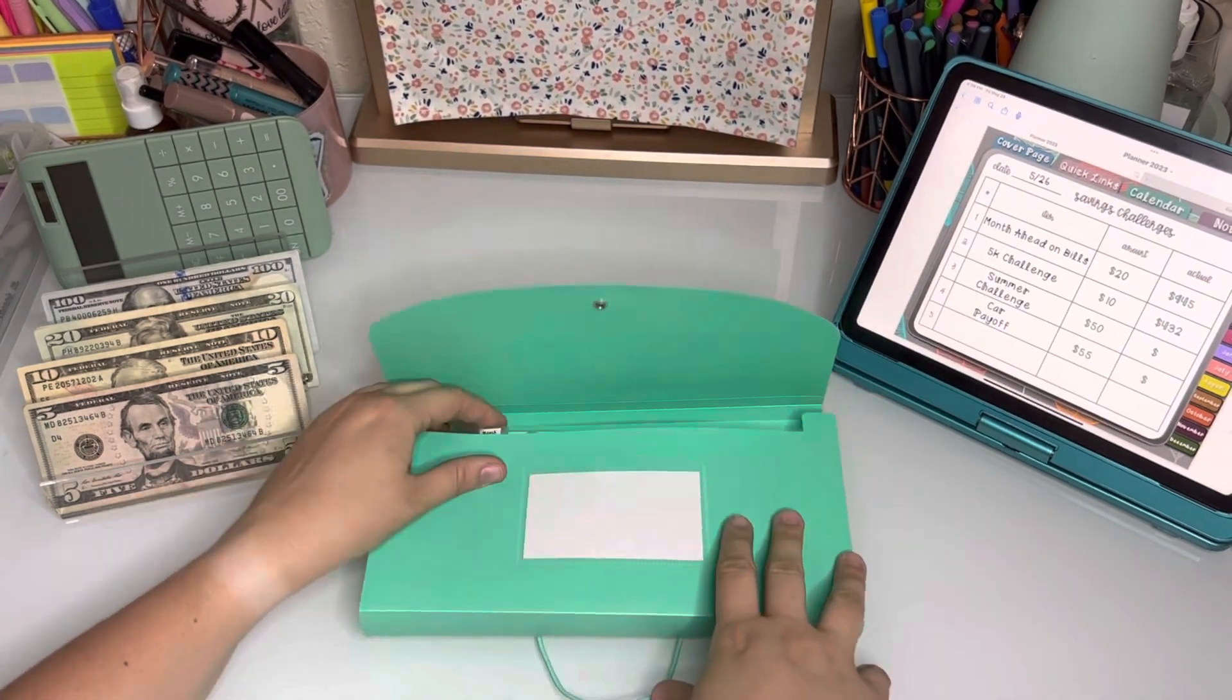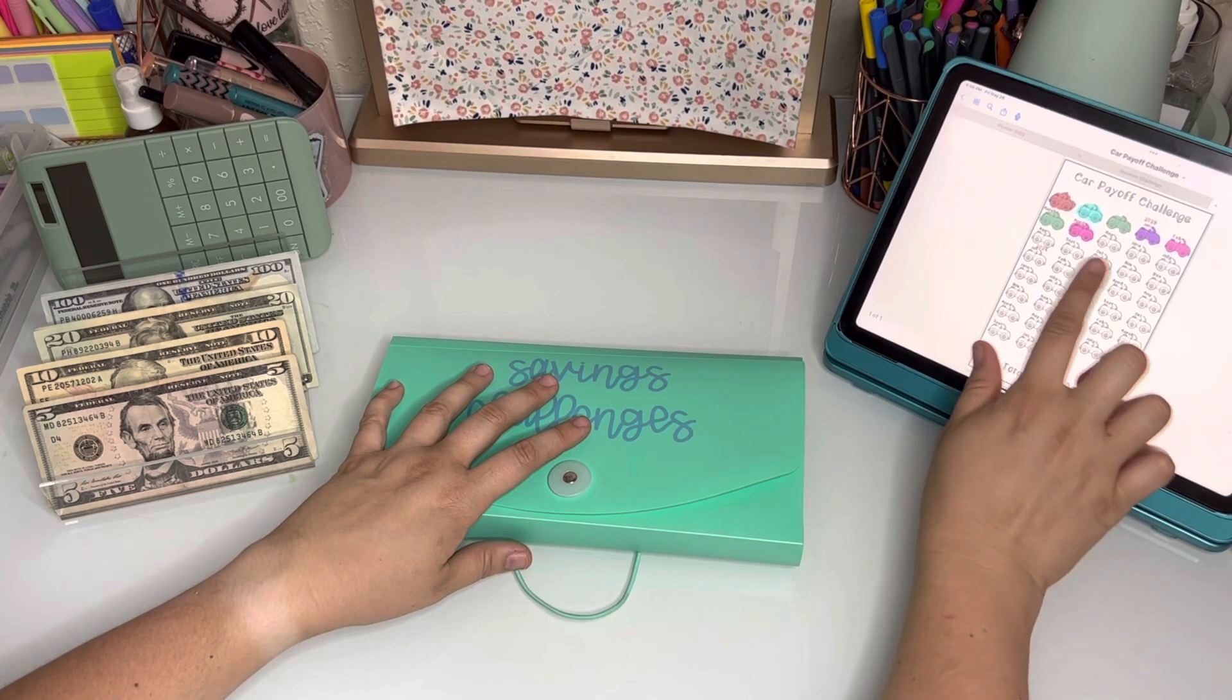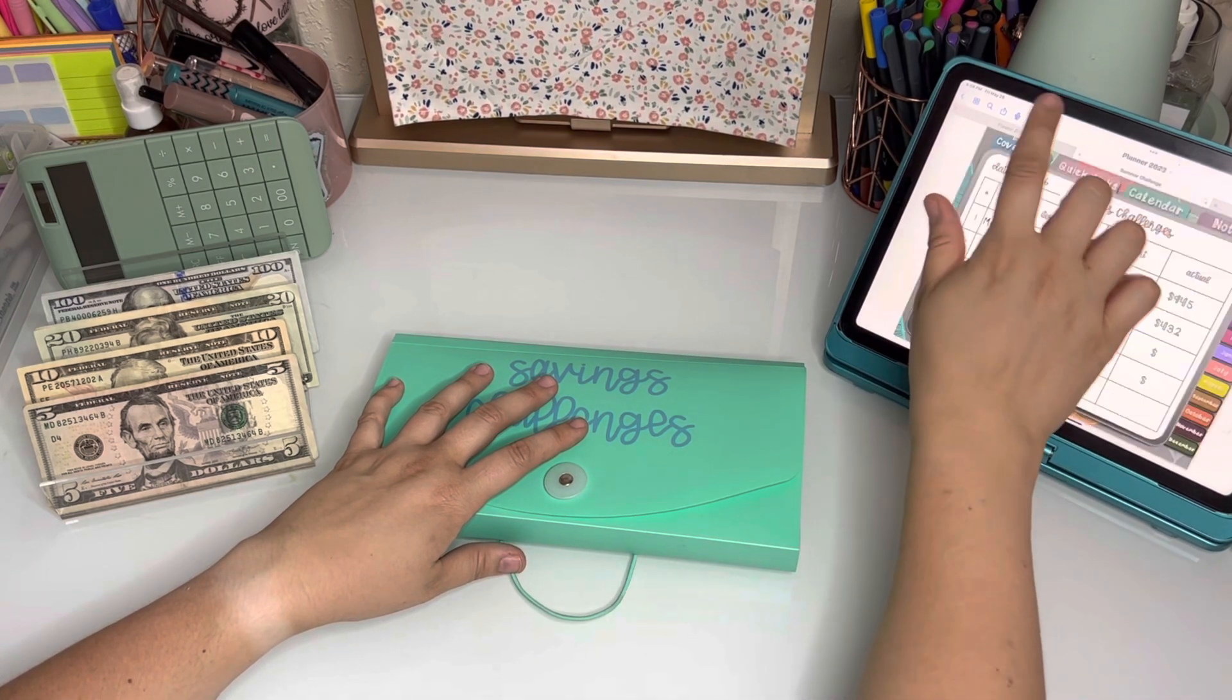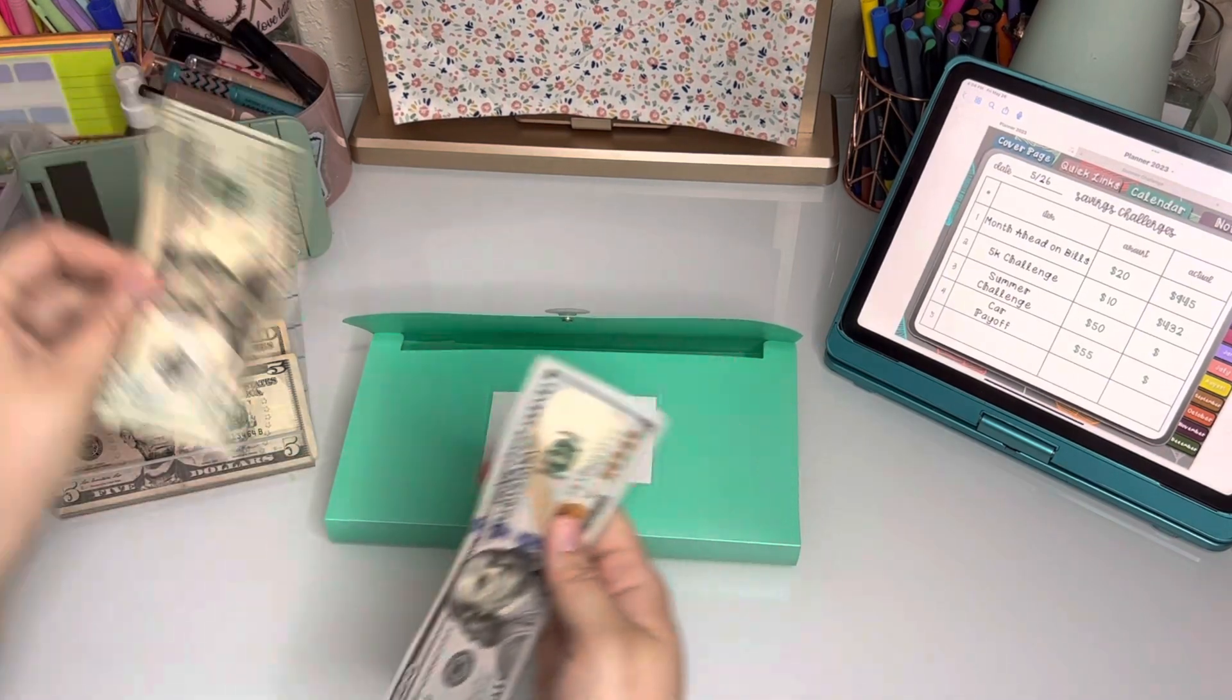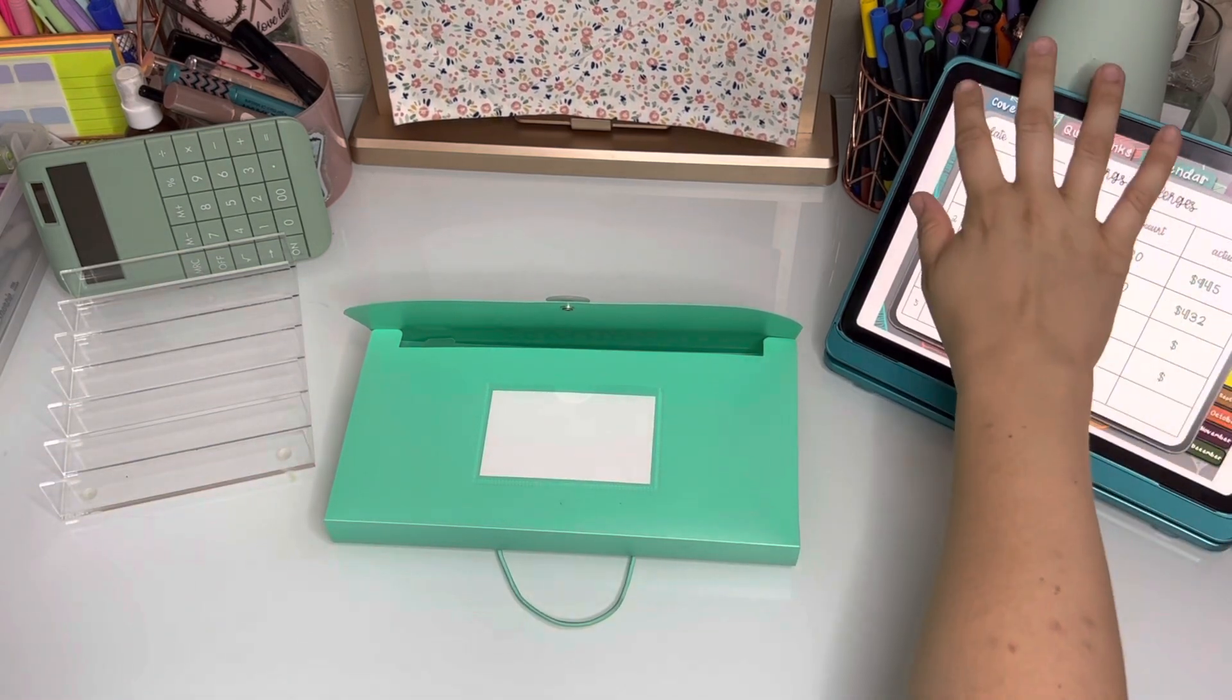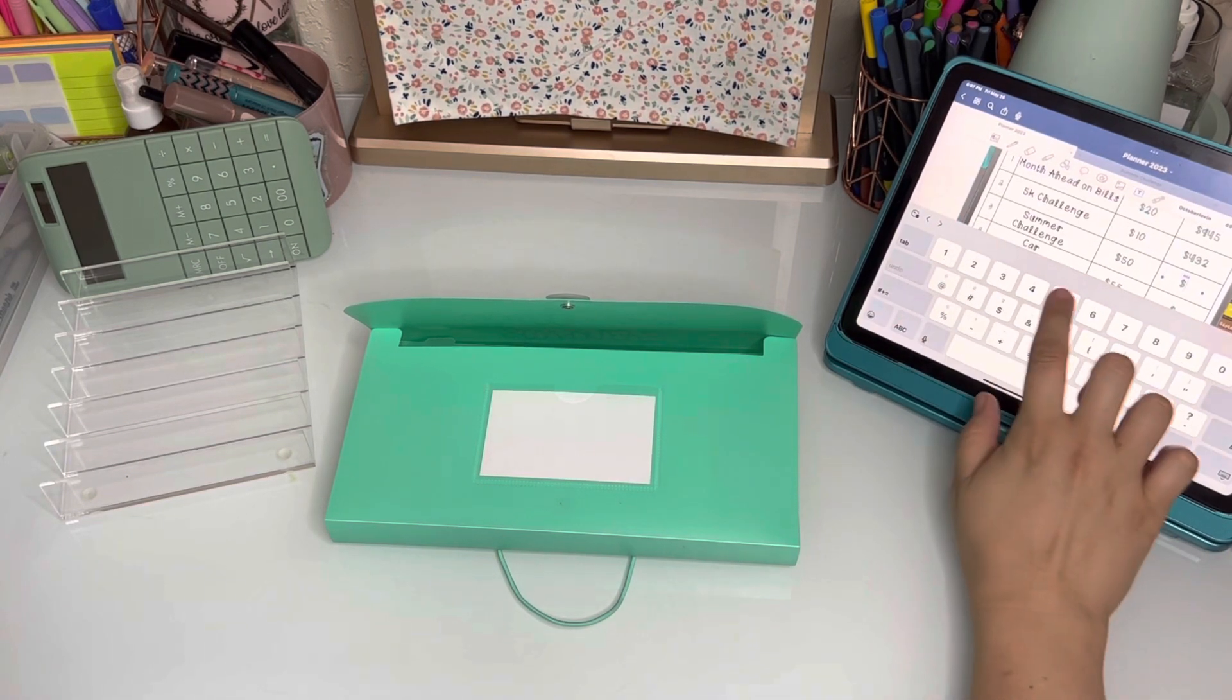For car payoff, I have not made a PDF, I don't think. I just have this car payoff when I make payments, so just kind of keep that tracked on here. But today, oops, I need to put $50 here into the summer challenge before I forget. $50. Okay.